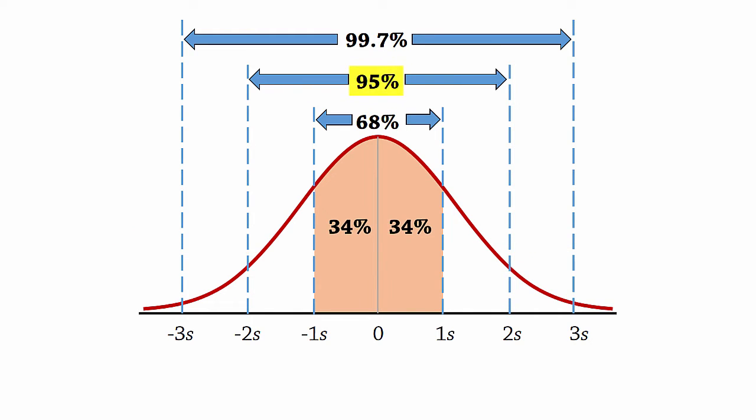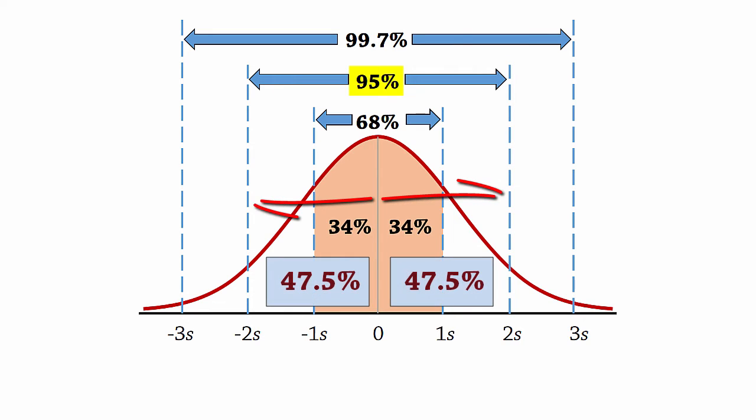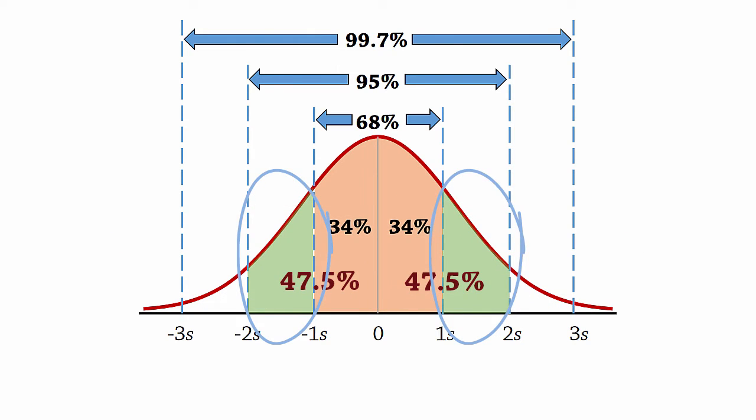With two standard deviations, we have 95% divided by 2, which gives 47.5% each. That leaves us with 2.5% on the tails. The areas here will be 47.5% minus...